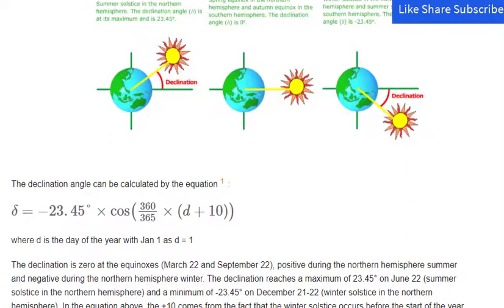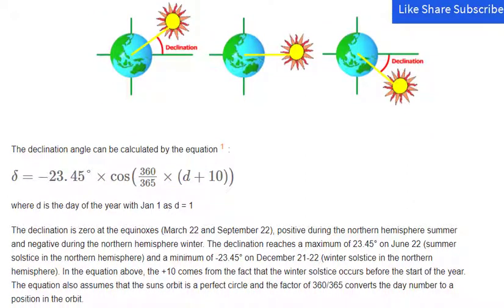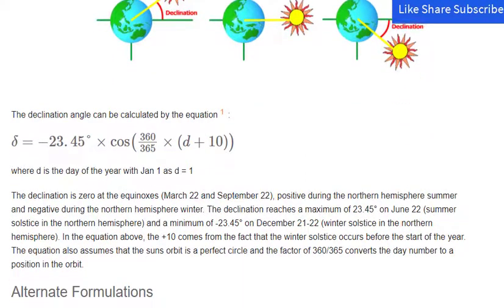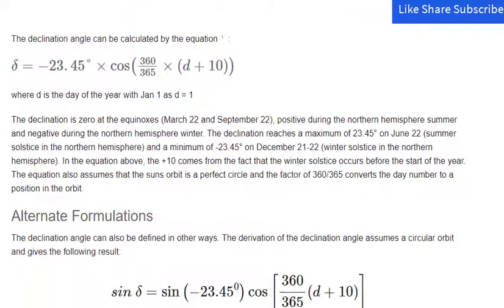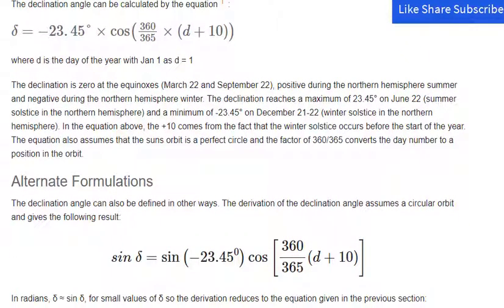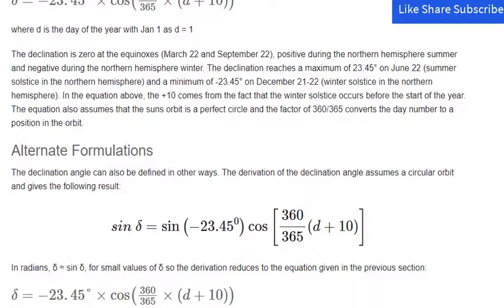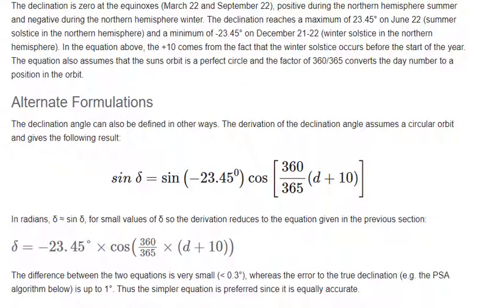The declination is zero at the equinoxes, March 22 and September 22, positive during the northern hemisphere summer and negative during the northern hemisphere winter. The declination reaches a maximum of 23.45 degrees on June 22, summer solstice in the northern hemisphere, and a minimum of minus 23.45 degrees on December 21-22, winter solstice in the northern hemisphere.